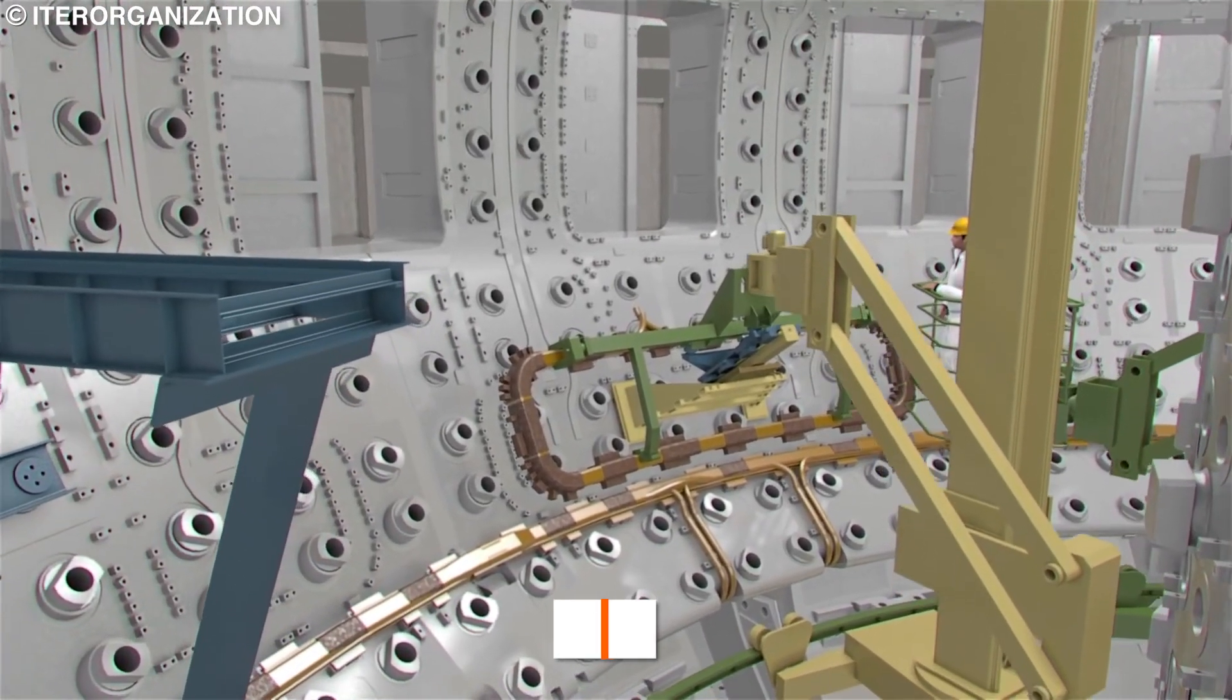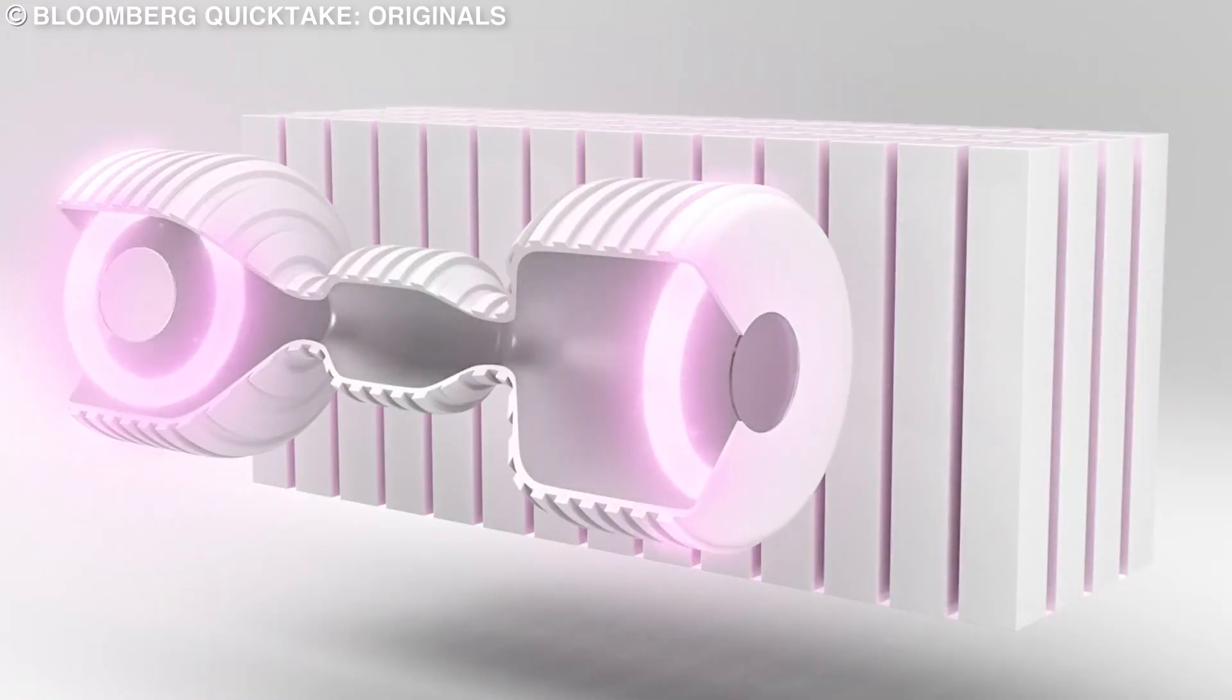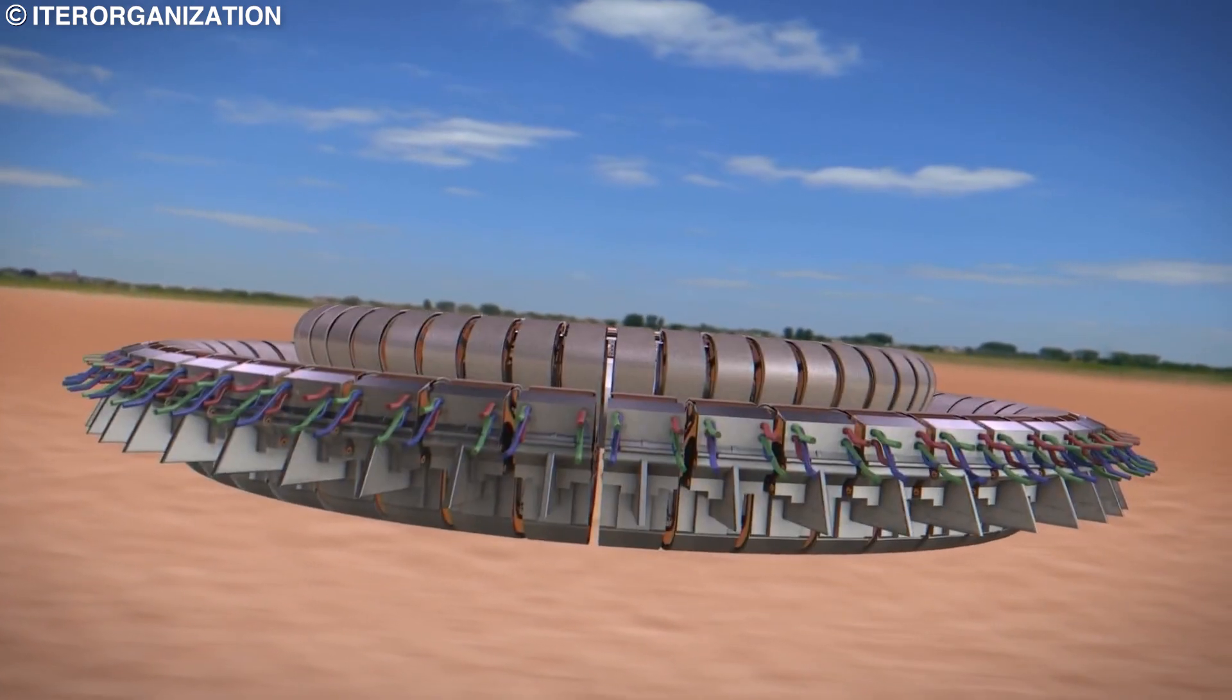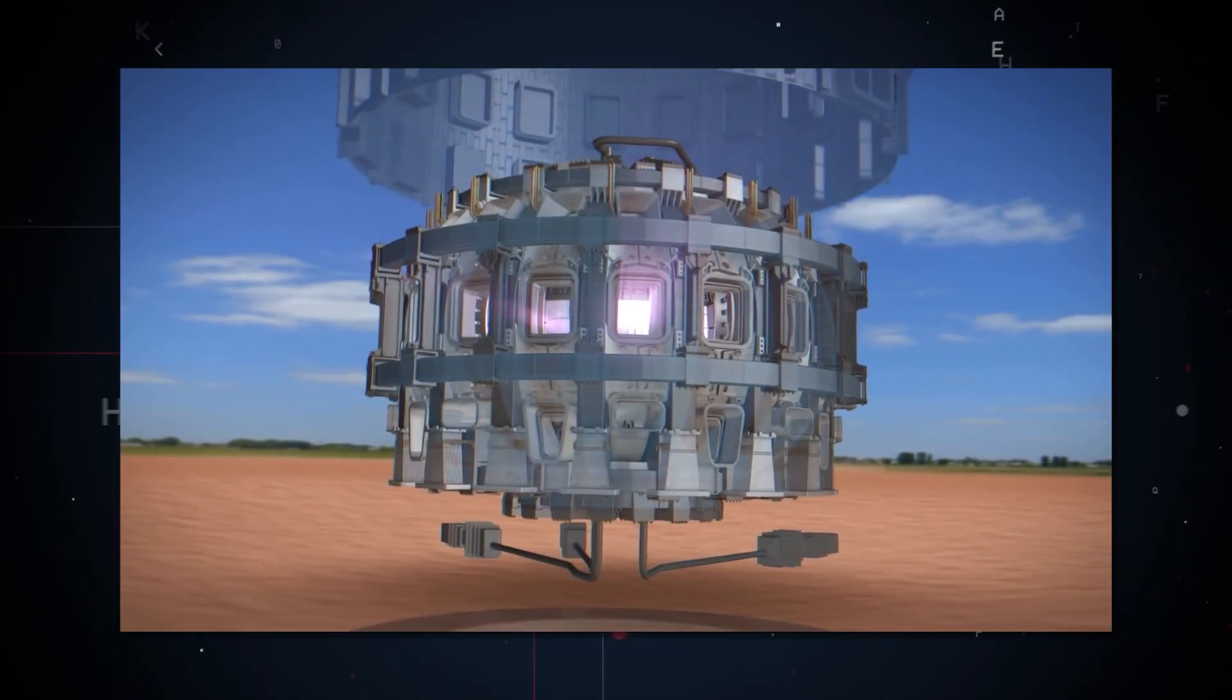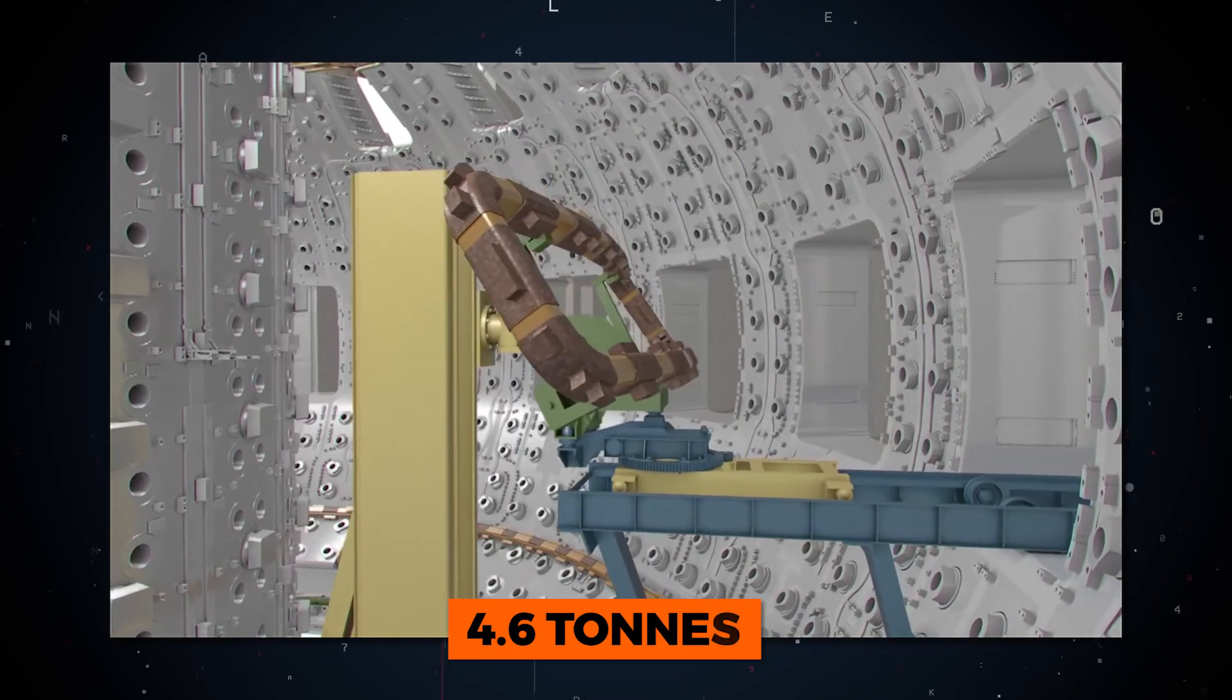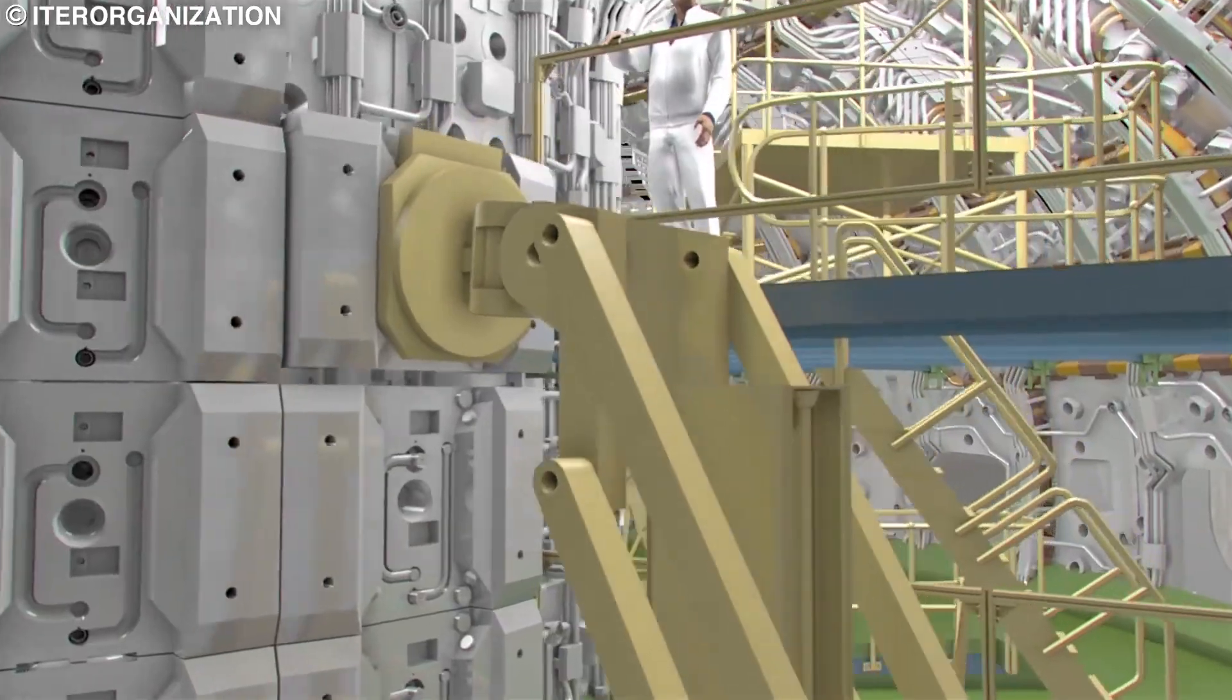The ITER's blanket system will be responsible for this. The blanket system, which covers a surface of 600 square meters, is one of the most critical and technically challenging components of the ITER tokamak. Together with the diverter, it directly faces the hot plasma of the fusion reaction. The 440 blanket modules that completely cover the inner walls of the vacuum vessel protect the steel structure and the superconducting toroidal field magnets from the heat and high-energy neutrons produced by the fusion reaction. Each blanket module measures 1 by 1.5 meters and weighs up to 4.6 tons.